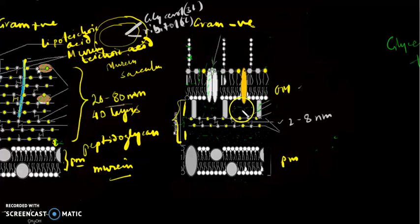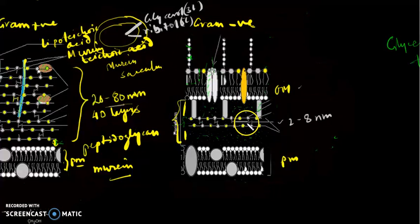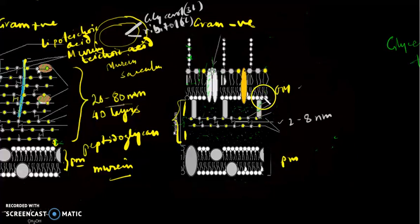The peptidoglycan layer is suspended in a viscous liquid-like material present in the periplasmic space, which is basically a protein solution. The proteins of this periplasmic space are of different natures — they are engaged in signaling or transport functions. The peptidoglycan layer is associated with the inner layer of the outer membrane with the help of a protein called Braun's lipoprotein.